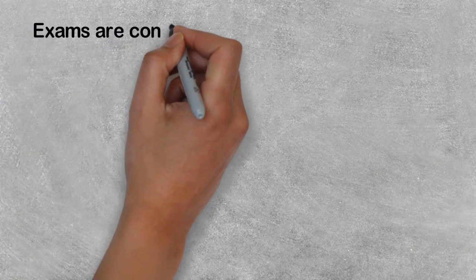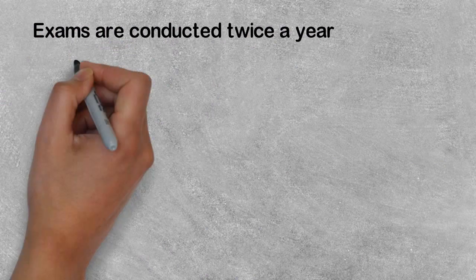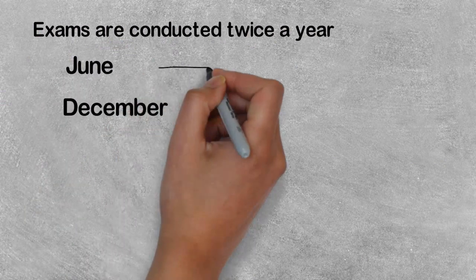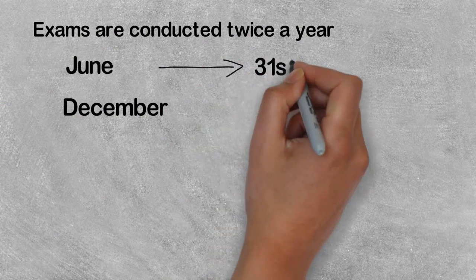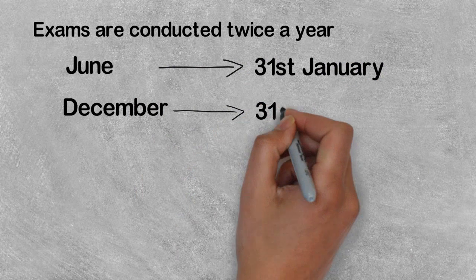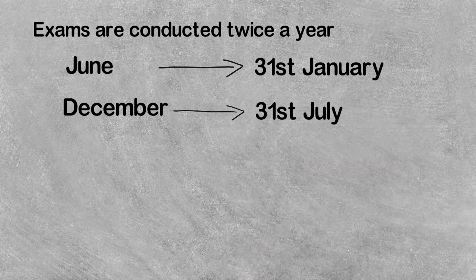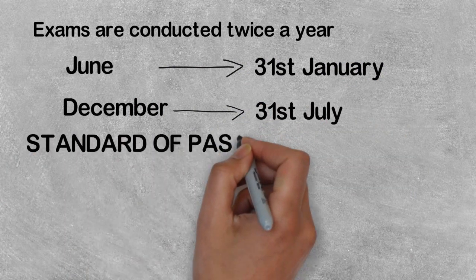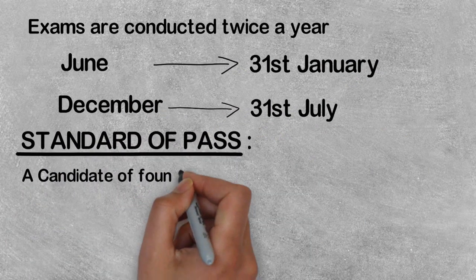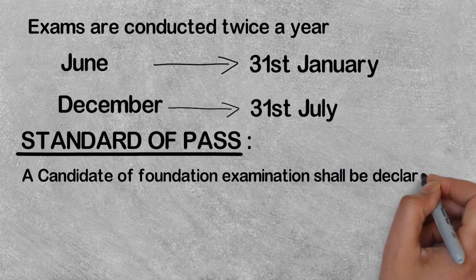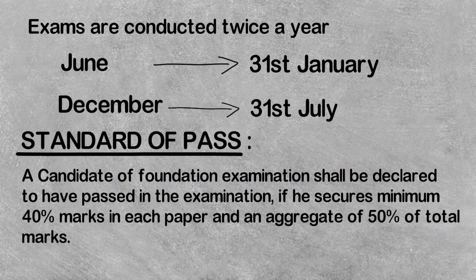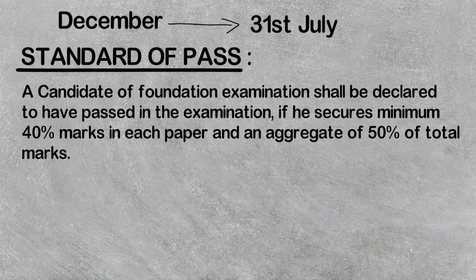Exams are held twice a year — in June and December. To appear in the June term, students must register by 31st January, and for December, registration by 31st July is compulsory. To pass the Foundation exam, a minimum of 40% marks in each paper and 50% aggregate marks are required. The Foundation course fee is ₹4,000.